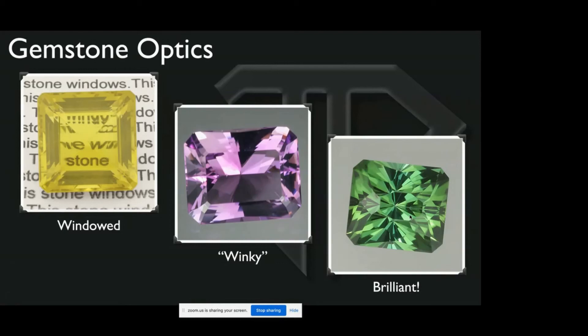There are a lot of techniques as a gem cutter that we use to try to reduce tilt windowing. One of the ones that I like is using a small table, because light going through the crown facets is refracted and bent, and therefore you have to tilt the gem further to make it tilt window through these side facets and not through the table. Another trick that many people use is using many rows of facets—many rows of facets at progressively deeper angles.